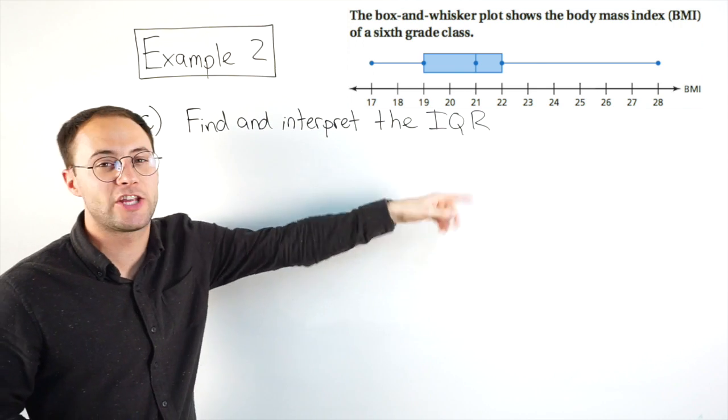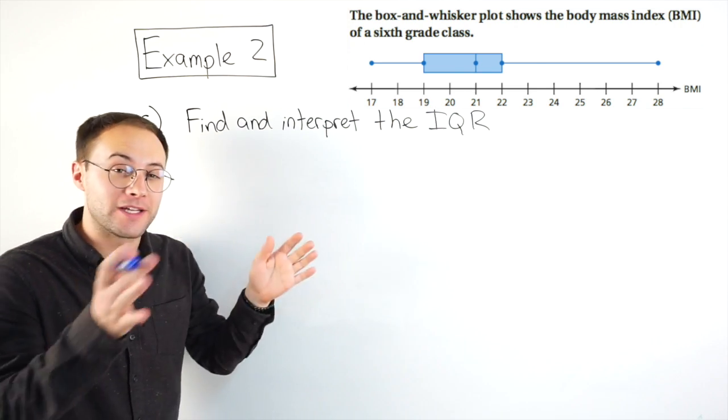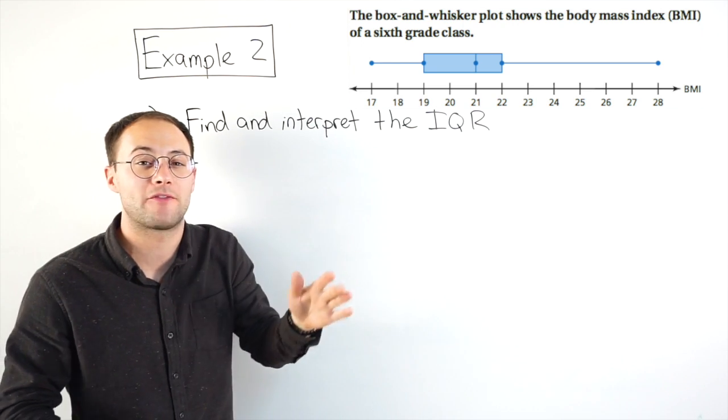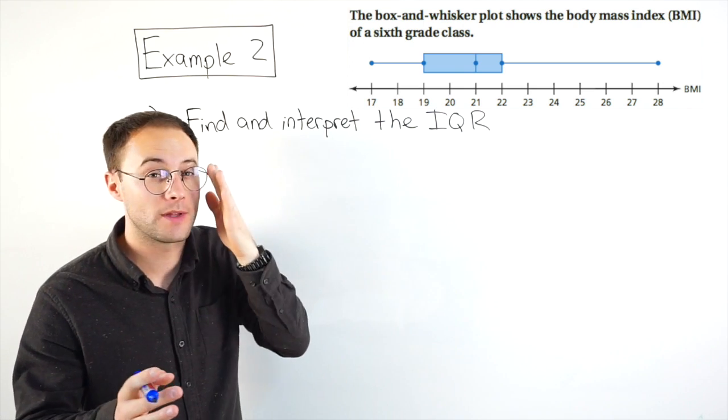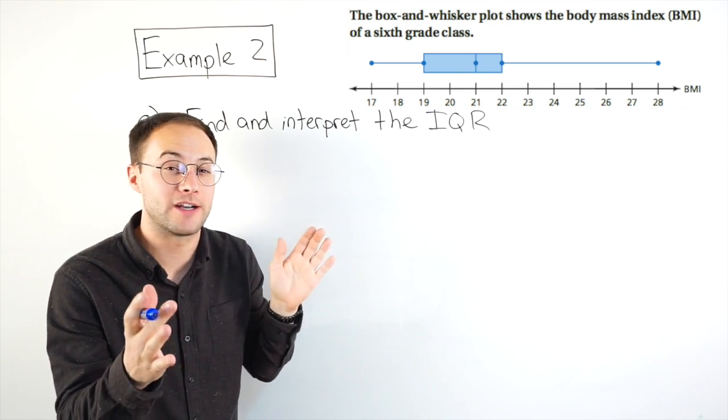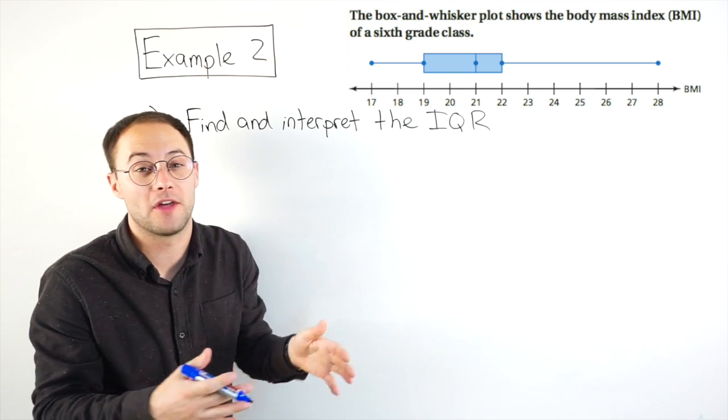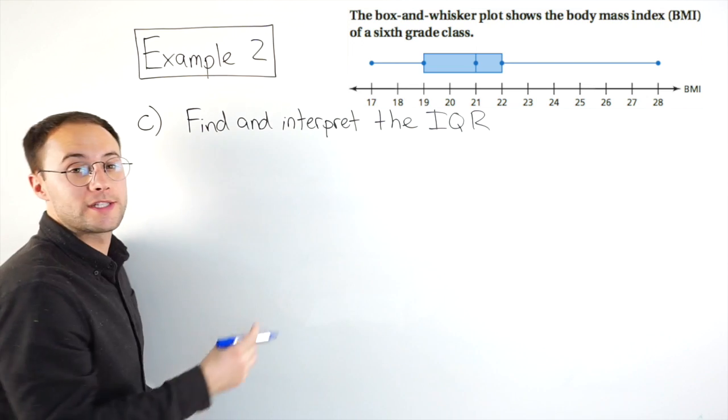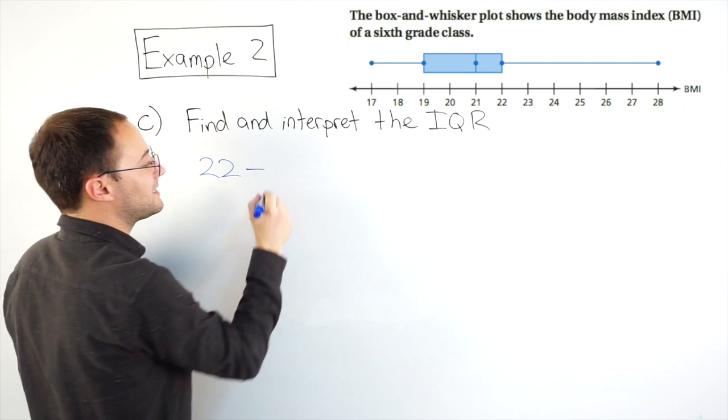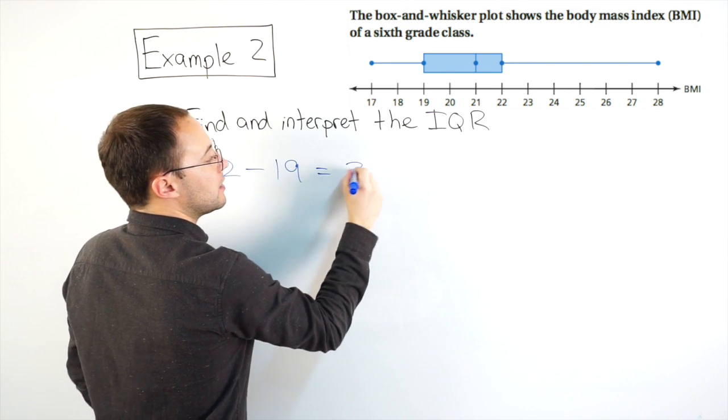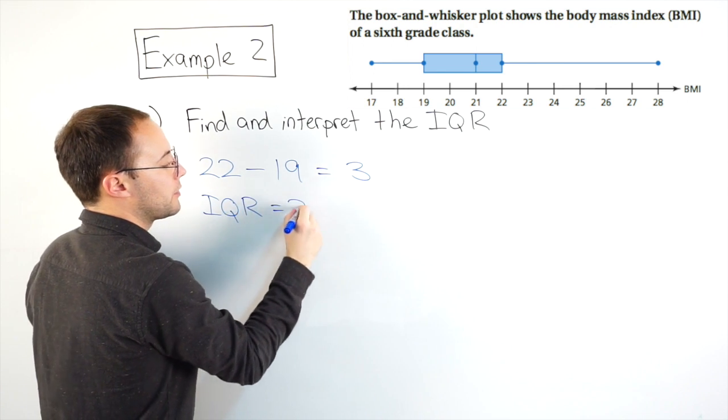Okay, part C, find and interpret the IQR or interquartile range. If you remember from measures of variation, interquartile range, we get that from taking the third quartile and subtracting the first quartile. So it's the range of that middle half of our data, or in a box and whisker plot, it's the range of the box. So third quartile, that was 22 minus the first quartile, which is 19. So our IQR is equal to three.